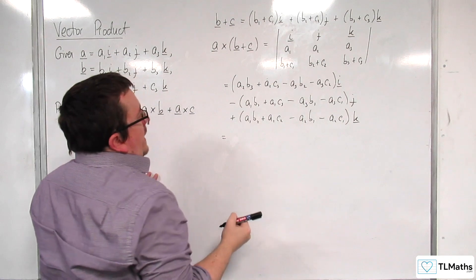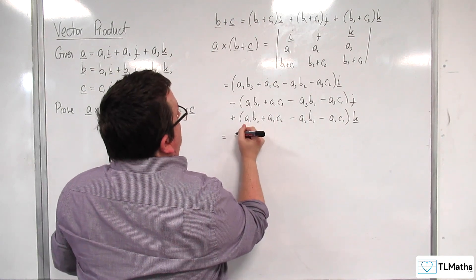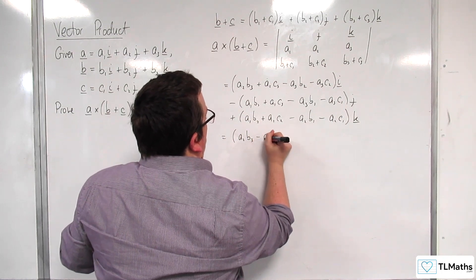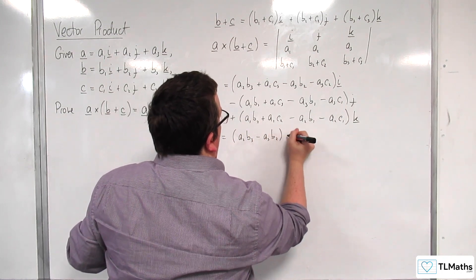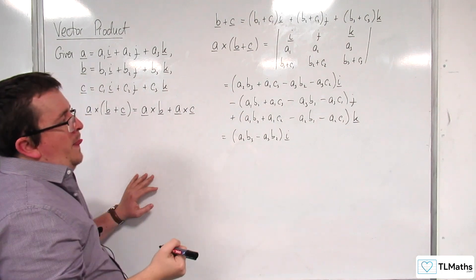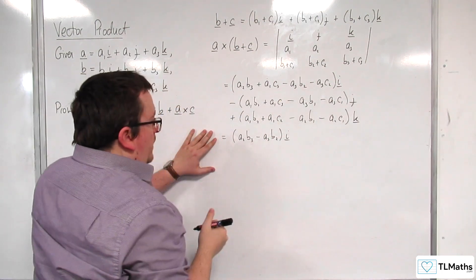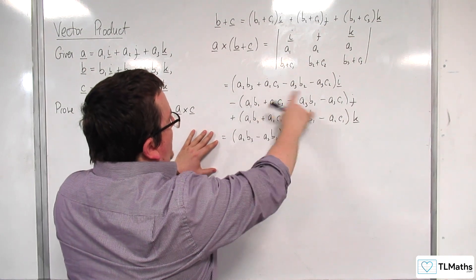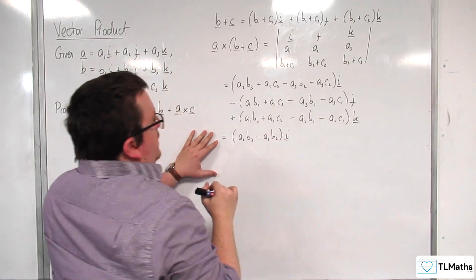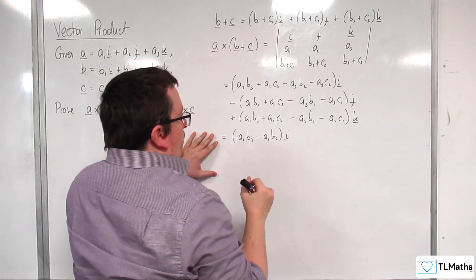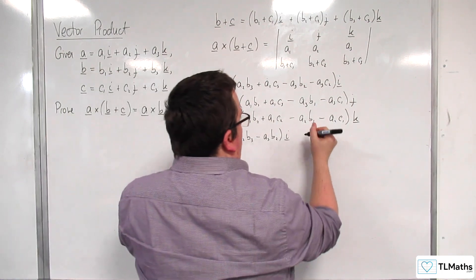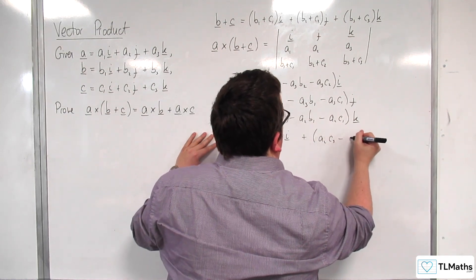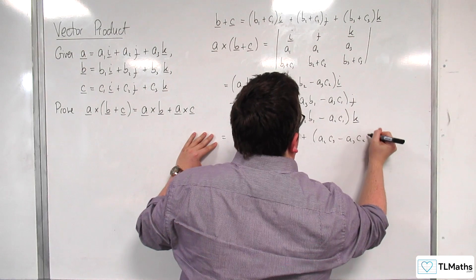Okay, so what I'll have is I'm going to write it down as a2b3 take away a3b2 i. And I've also got a2c3 take away a3c2. So somewhere else, where should we put it? Let's just put it here: a2c3 take away a3c2 i.